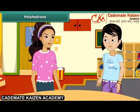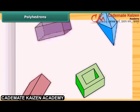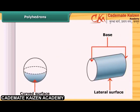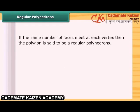Do you know what we call a solid having flat faces, edges and vertices? Those solids are called polyhedrons. Are these objects polyhedrons? No, these are not polyhedrons, because they do not have flat faces. If the same number of faces meet at each vertex, then the polyhedron is said to be a regular polyhedron.